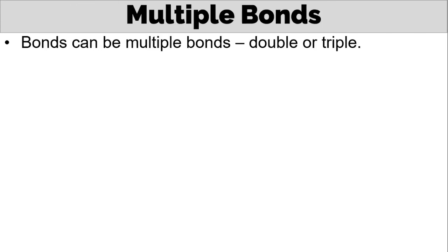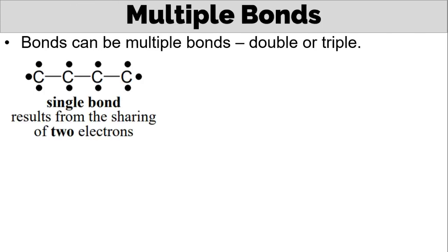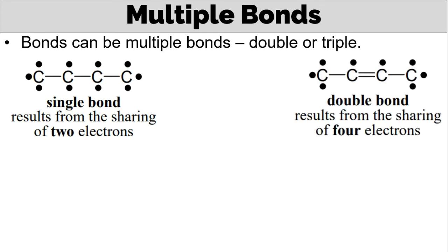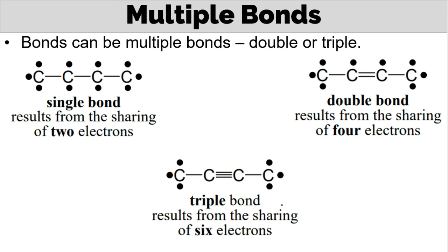Bonds can be multiple bonds, double or triple. So we have the single bond. This results from the sharing of two electrons. We have the double bond, which results from the sharing of four electrons. And the triple bond, which results from the sharing of six electrons. So if you're going to count, all of these carbons will still follow the octet rule eventually. Let's try in the triple bond. So you have two here, two, four, six, eight. So eight electrons here.